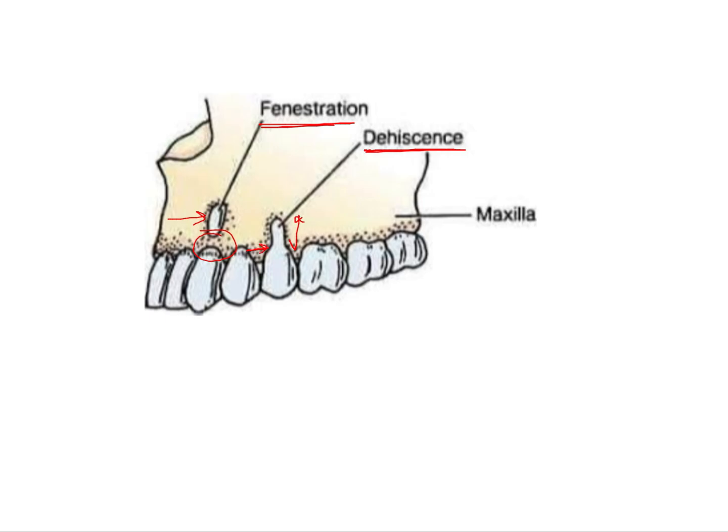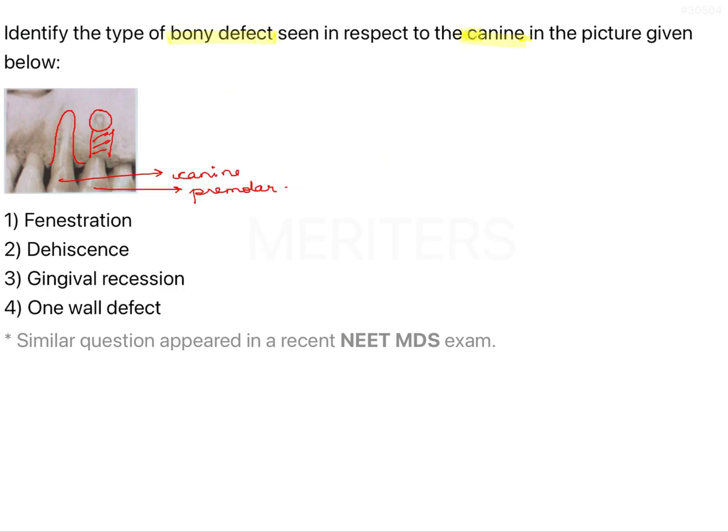So in the given question, the canine has dehiscence and the premolar has fenestration.